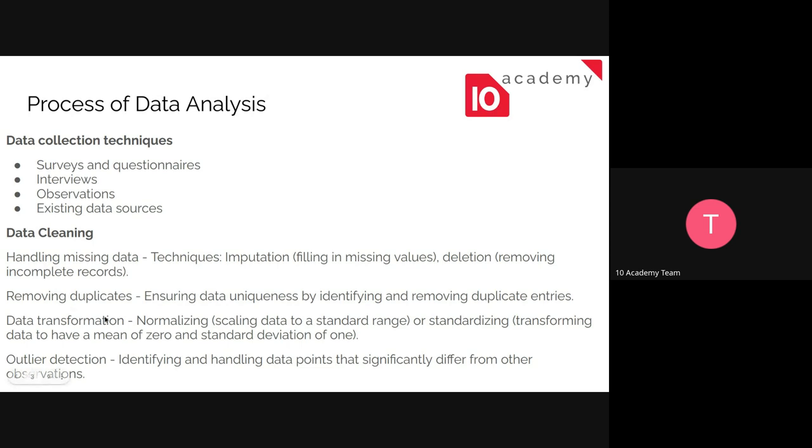And data transformation, I don't think we need to work on this one for now. But if you want to know, it's just normalization or standardization of data. Standardization means sometimes your data may have a big difference in the value of equivalent. For instance, the value of one row could be a thousand and the next row could be a hundred, a thousand, or a million. So if the variation of the data is this big, it could influence your visualization.